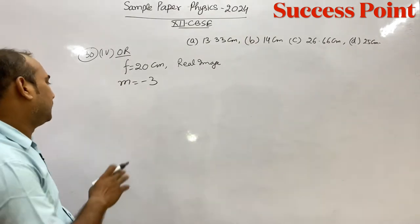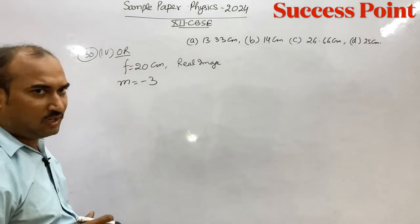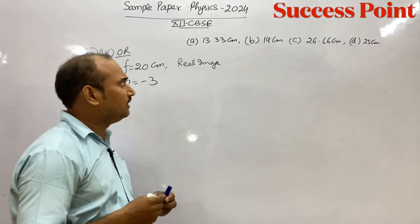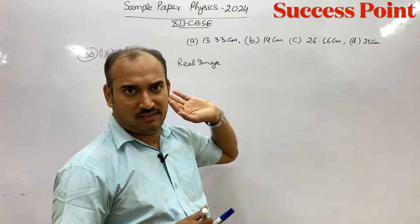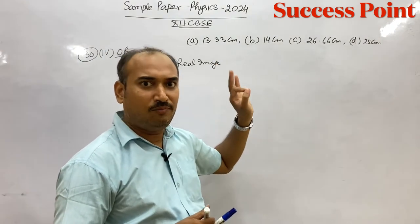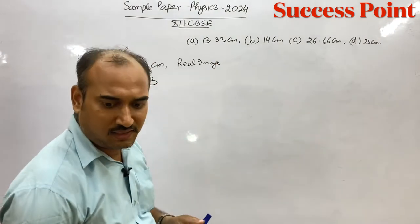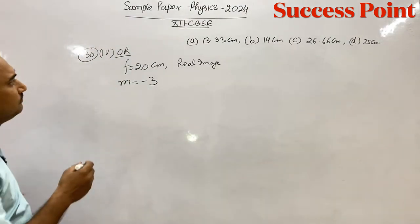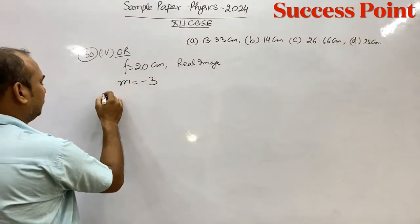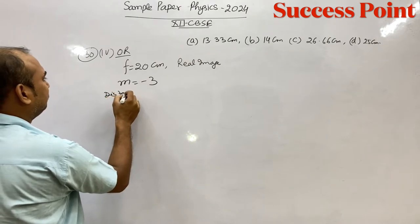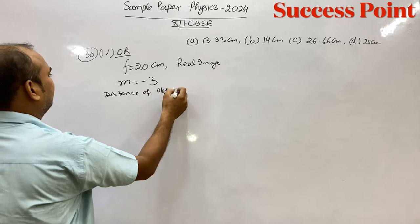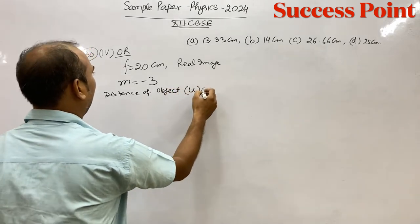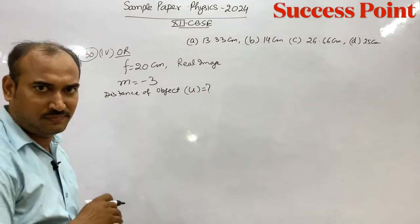M, you can give it minus 3. How much is the option correct? This is the object. We can tell you the object, the distance. This is the distance of object from the lens U.